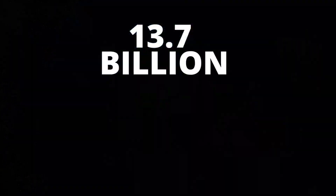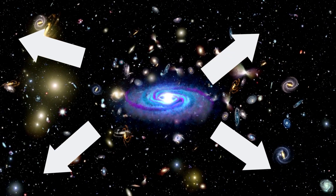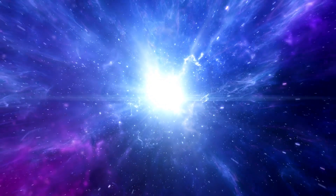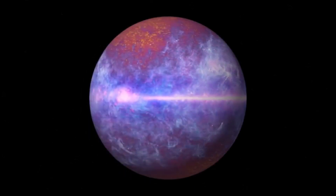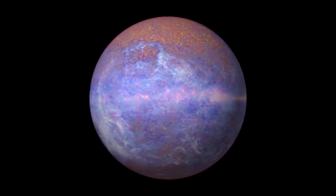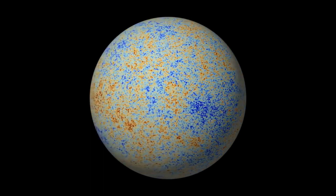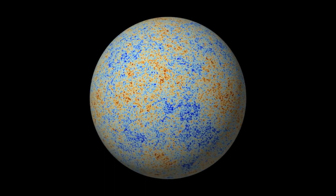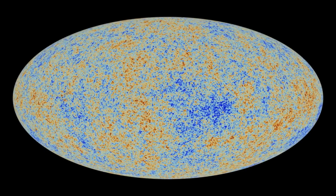Is our universe 13.7 billion years old when measured only on Earth, or is this result the same everywhere in the universe? Let's try to answer this question in terms of the Big Bang Theory. The Big Bang Theory calculates the universe's age based on cosmic microwave background radiation, which measures the temperature distribution of the universe and carries traces of temperature fluctuations in the early moments of the universe. These fluctuations are used to calculate the age of the universe.